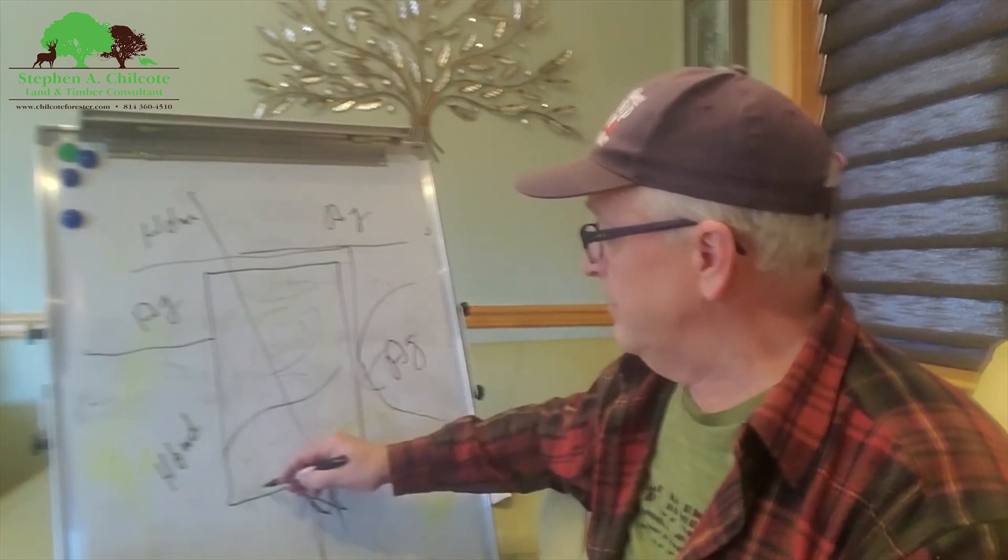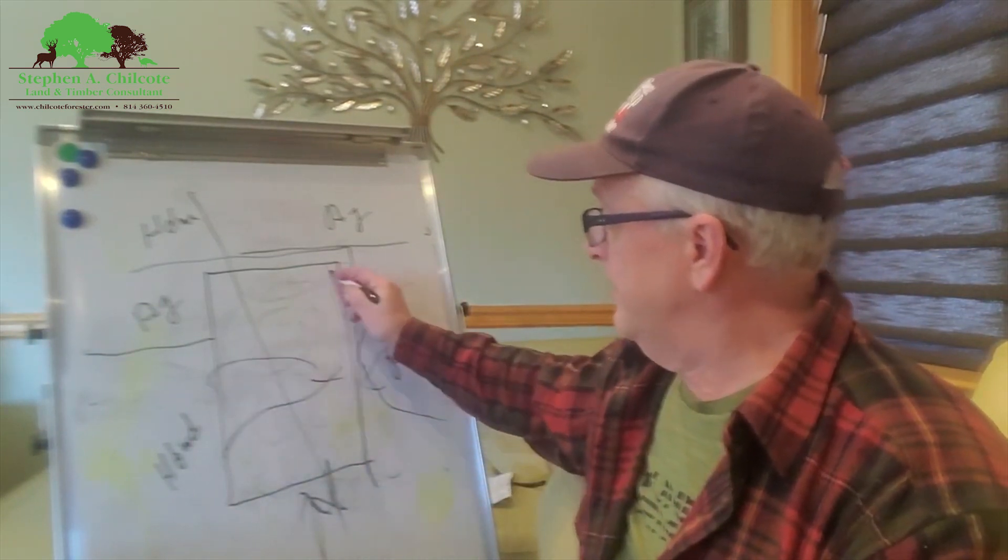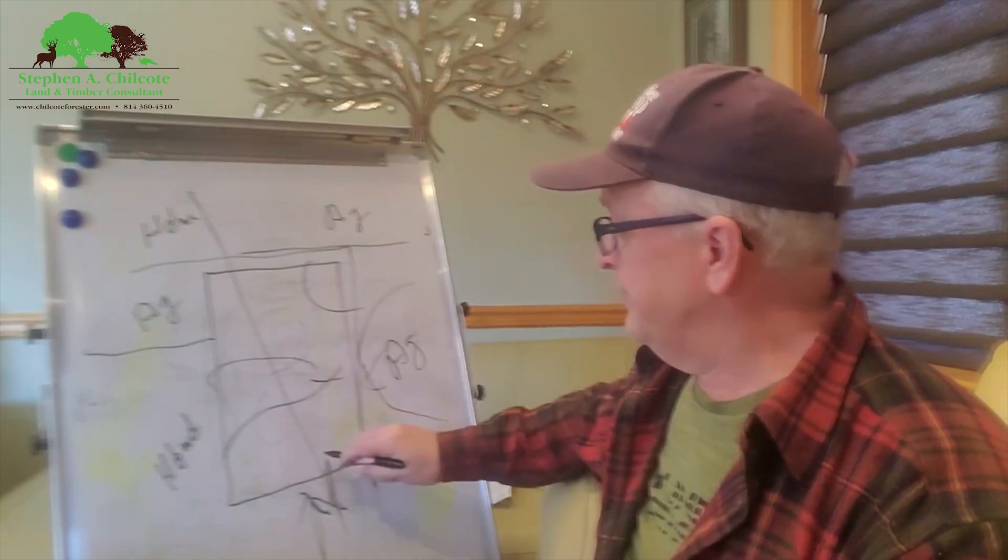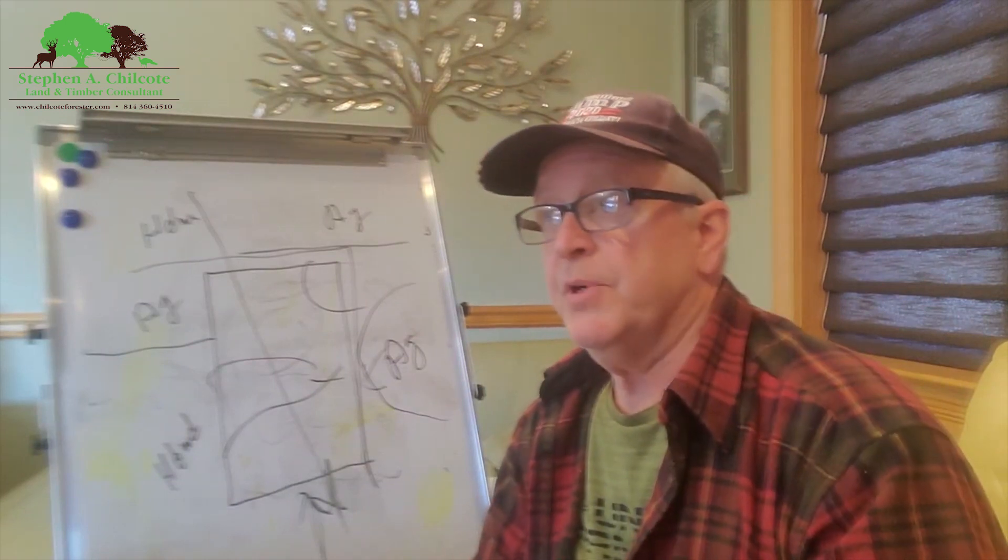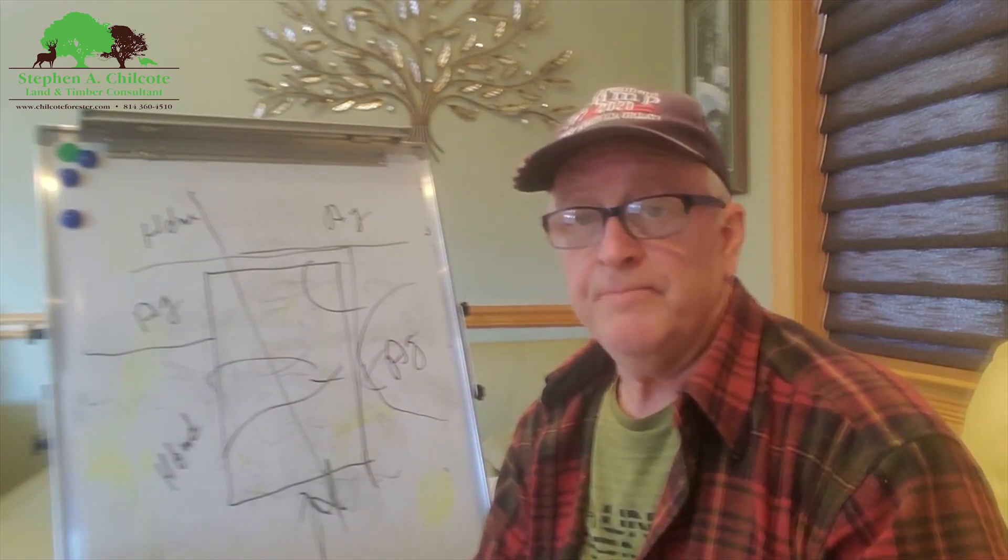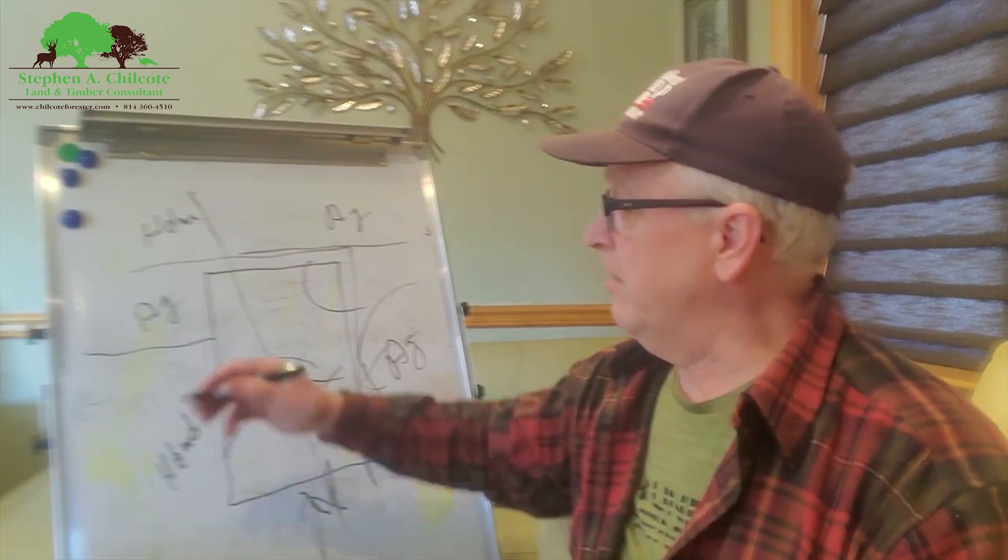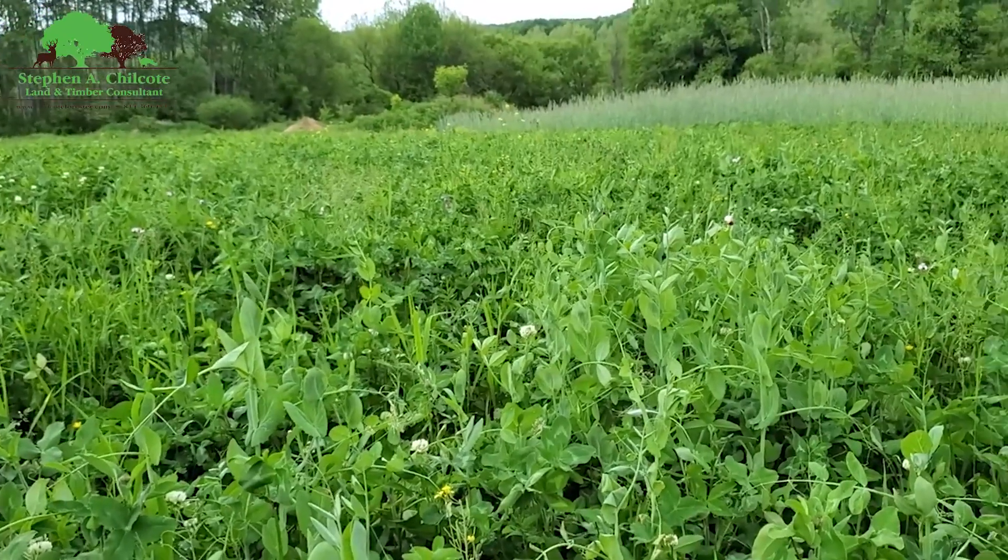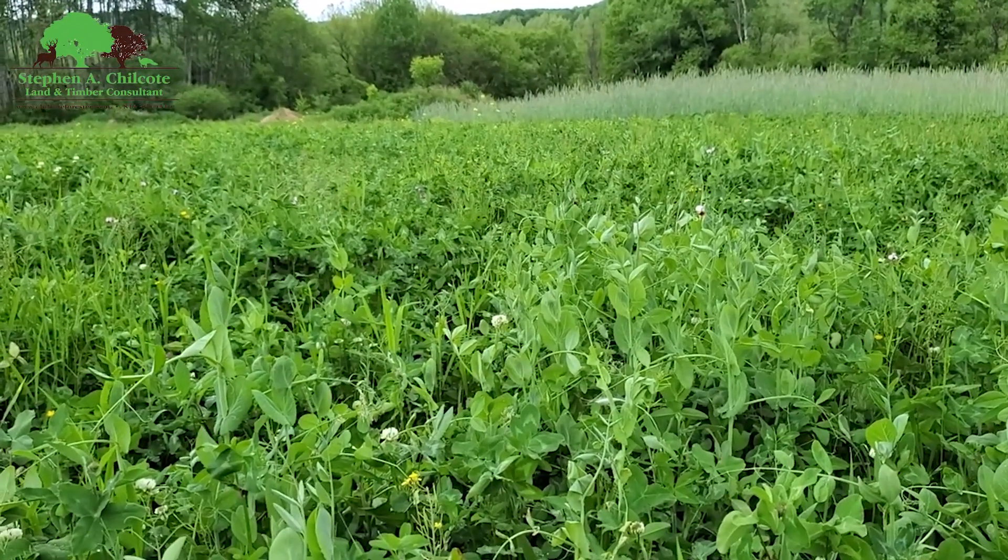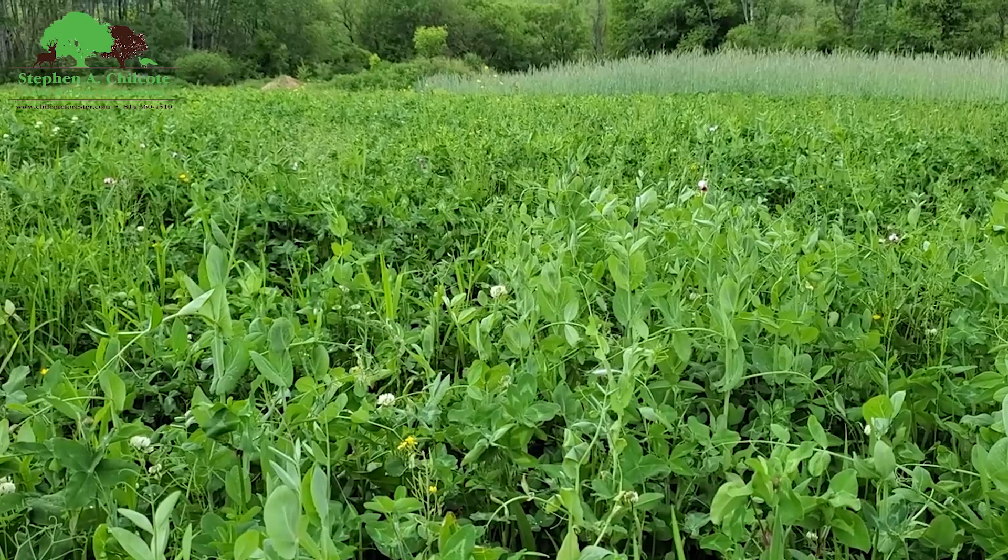Some soils are better for growing food plots than others. So you have to put your food plots where the appropriate soil is. You can't just draw a map of ideal food plot situations and travel corridor situations and expect deer to follow that and expect to get a successful food plot.